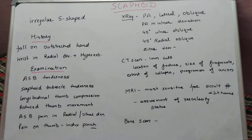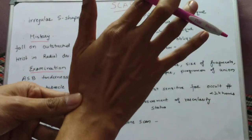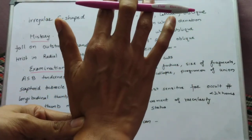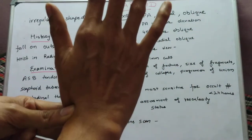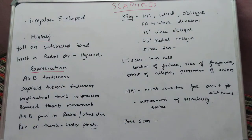The patient will present with a typical history of a fall on the outstretched hand with the wrist in extension and radial deviation. When the patient falls in this manner, scaphoid fractures are common. After the history, we will go for the examination.